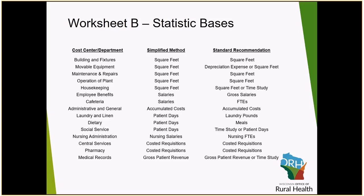When utilizing laundry pounds under the standard recommendation for laundry and linen, we recommend that you accumulate the information annually so that the statistic represents the entire year of operation. If you are utilizing a third party, make sure you are obtaining the full statistic of pounds, not pieces of laundry processed. For dietary under the standard recommendation using meals, again accumulate this annually, and the statistic should not exceed patient days times three meals per day. If it does, there are likely items included within your meal count that do not equate to a full meal equivalent and should be reviewed.